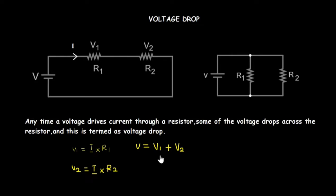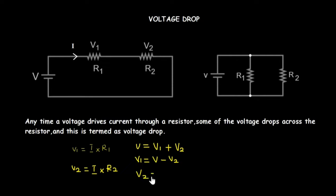So the total voltage from the source equals V1 plus V2. When asked to find V1, you make V1 the subject: V1 equals V minus V2. When asked to find V2, it equals V minus V1. Using this formula you will be able to calculate the voltage drop across these two resistors.